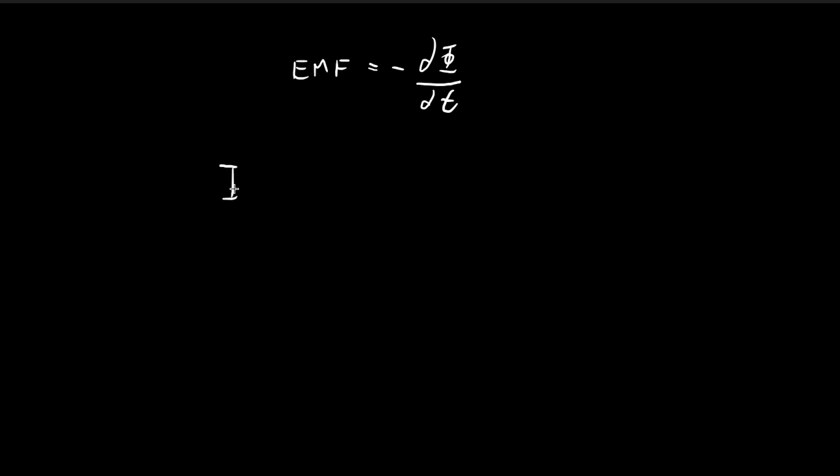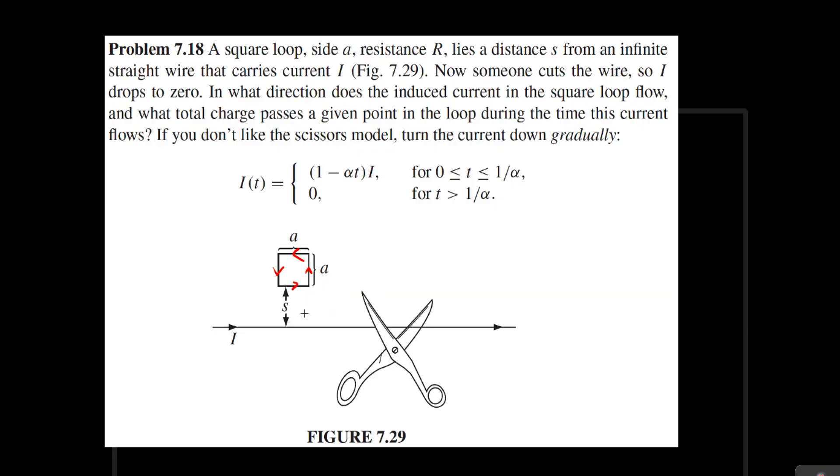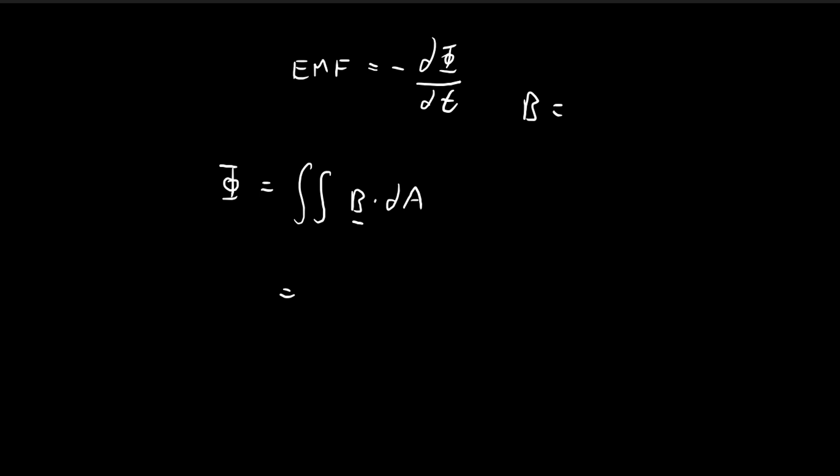So first of all, let us come up with a formula for flux. So as always, we start off with this formula. And first of all, what is the magnetic field? Well, the magnetic field around this wire over here, again, use your right-hand rule, it's going to go around like this. So it's going to come out of the square over here. And the magnitude is going to be equal to μ₀I divided by 2πr.